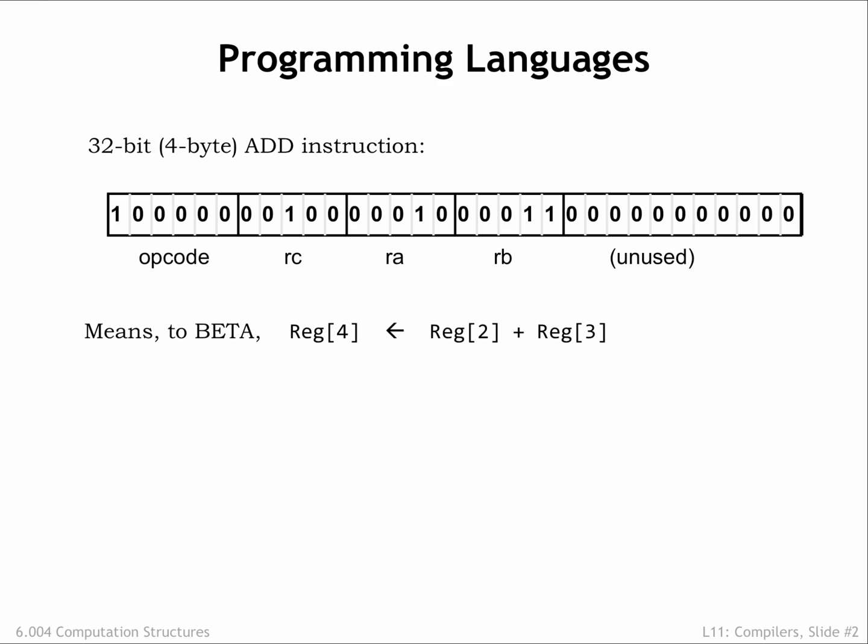The instructions are formatted as opcode, source, and destination fields that form 32-bit values in main memory. To make our lives easier, we developed assembly language as a way of specifying sequences of instructions. Each assembly language statement corresponds to a single instruction.